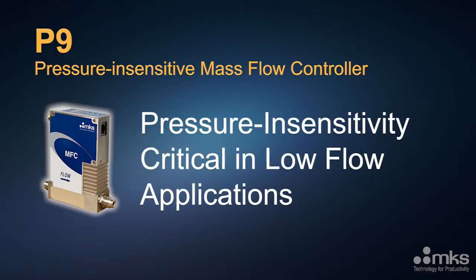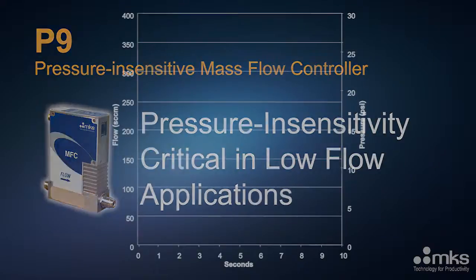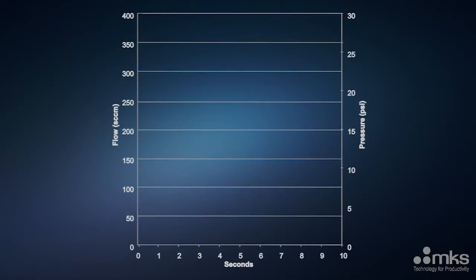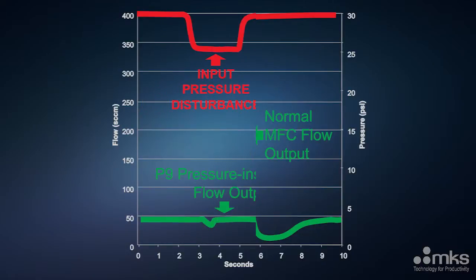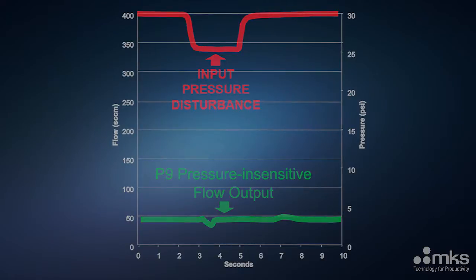Which is especially important in low gas flow applications such as complex gas distribution systems. Low flow applications are particularly sensitive to upstream or downstream pressure disturbances where variation in gas loads cannot be overcome by the low flow of process gas into and out of the system. While other MFCs are particularly sensitive to supply pressure disturbances in low flow applications, the P-9 provides stable and accurate flow.